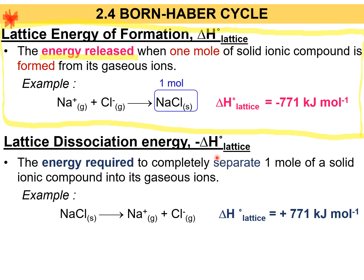If we reverse the equation for lattice energy of formation, it becomes the lattice dissociation energy, and the enthalpy sign changes to positive. Lattice dissociation energy is the energy required to completely separate one mol of a solid ionic compound into its gaseous ions. This is the energy needed when separating a solid ionic compound into its gaseous ions.